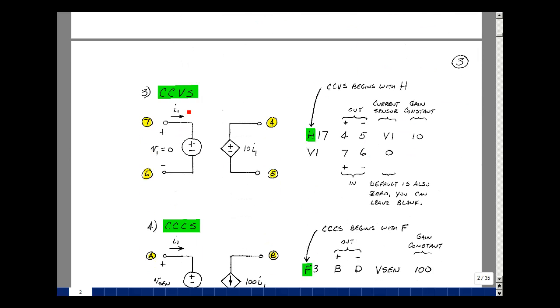Current controlled voltage source in SPICE begins with the letter H. We have a plus and minus terminal. This will be our first two. But now we need to sense the current in a wire. The way this is done in SPICE is to use a voltage source with a value of zero. So it just becomes a short circuit. There is a plus and a minus sign associated with every voltage source. That's your first node and your second node.